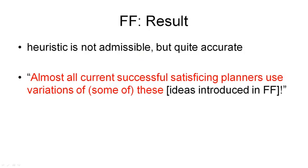Now you have seen the heuristic computed by the FF planner and used for its search. The heuristic is not admissible, so FF is not guaranteed to return a minimal plan. But this heuristic is quite accurate, meaning FF finds a plan reasonably fast because it explores a smaller portion of the search space than planners using a less accurate heuristic. Also, the heuristic is efficient to compute since both functions can be computed in polynomial time. As Jörg's slides summarize: almost all current successful satisfying planners use variations of some of these ideas introduced in FF.